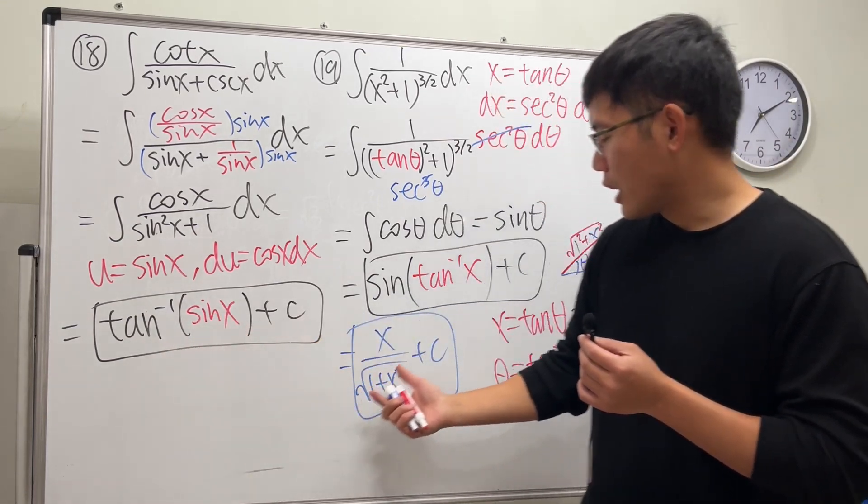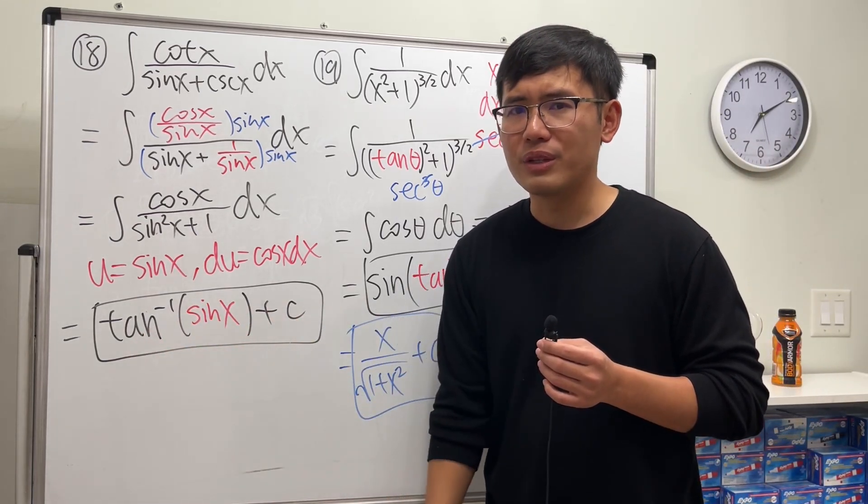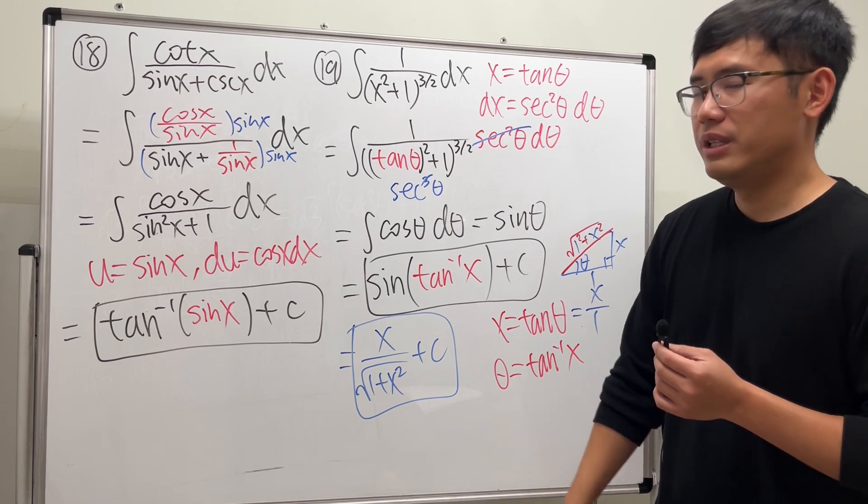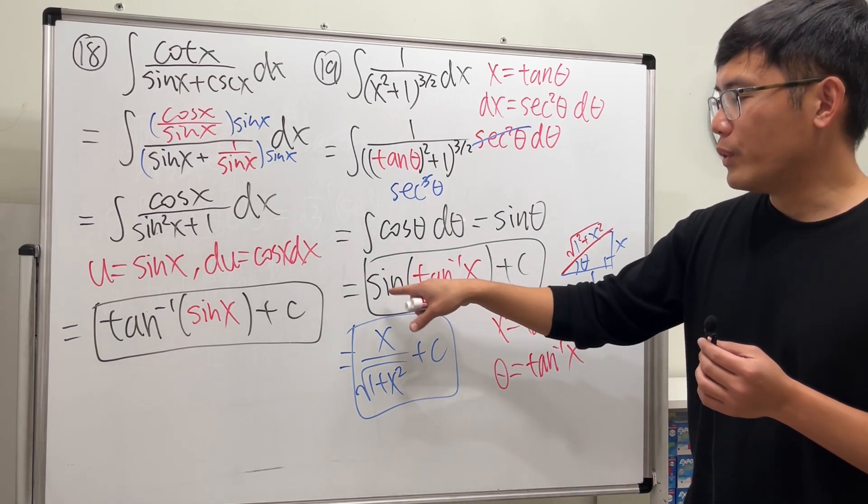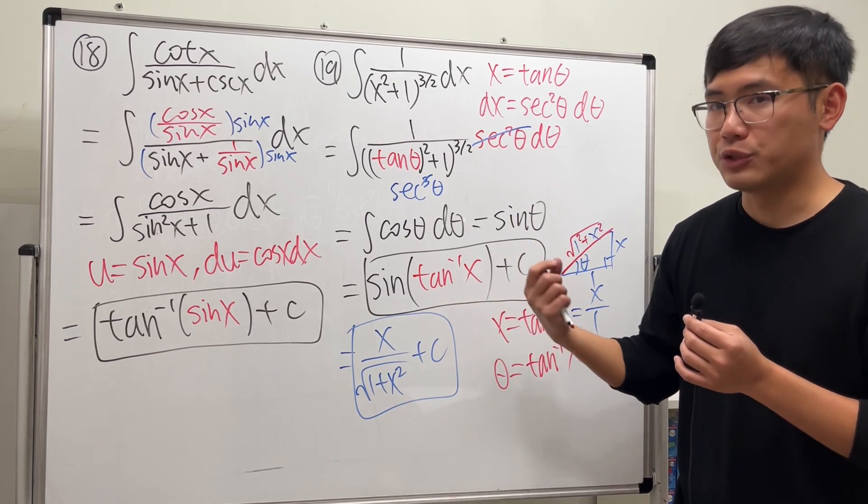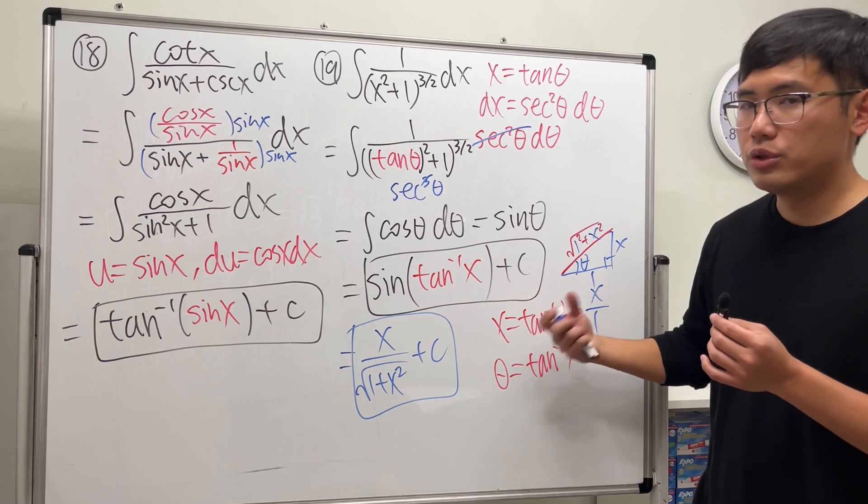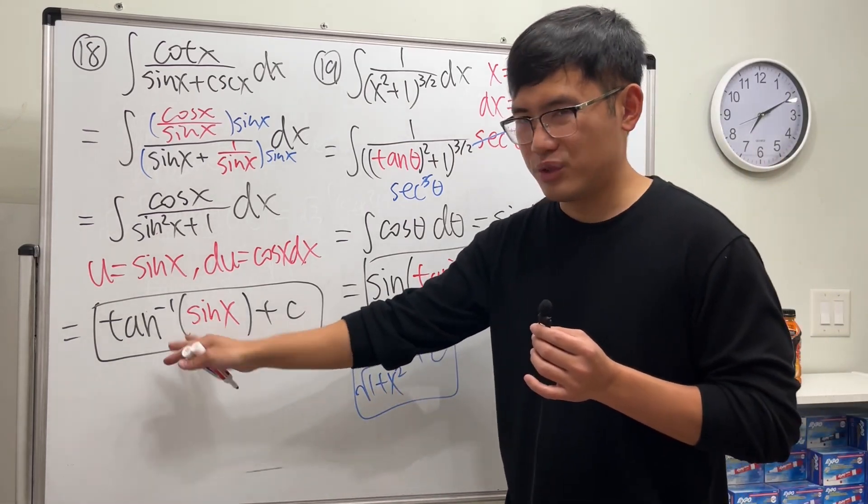We can only do this when we have a regular trig function on the outside and the inside is an inverse trig function. And you can draw a right triangle and you can figure out the ratio of the sides. But this right here, just leave it like that.